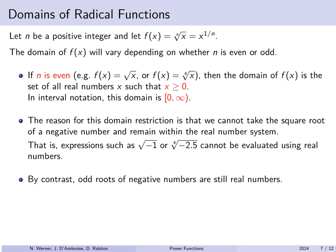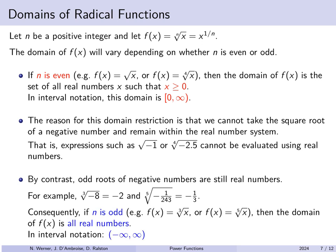In contrast, if n is odd (e.g., cube root, fifth root), the domain is all real numbers, (-∞, ∞). The cube root of -8 exists and equals -2, since (-2)³ = -8. Similarly, the fifth root of -1/243 is -1/3. So when n is odd, there are no domain restrictions.